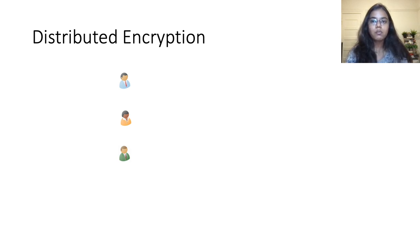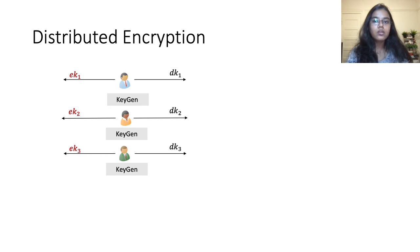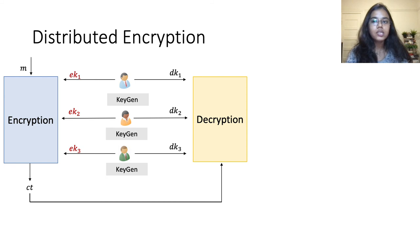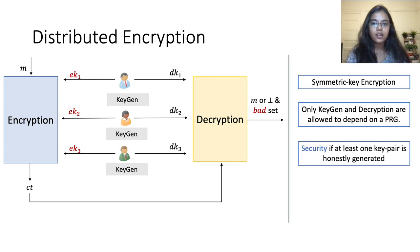Distributed encryption is a primitive involving multiple parties. Each party locally runs the key generation algorithm to generate its encryption and decryption keys. All the encryption keys are used for encrypting a message, and all the decryption keys are used for decrypting the ciphertext. The decryption algorithm either outputs the correctly decrypted message, or it outputs abort along with a subset of corrupt parties responsible for the decryption failure. Although this is a symmetric key primitive, we distinguish between encryption keys and decryption keys — this allows us to define the encryption algorithm in a way that is independent of the underlying PRG. For garbling circuits with more than polylogarithmic depth, we require decryption keys whose bit length is shorter than the message length.